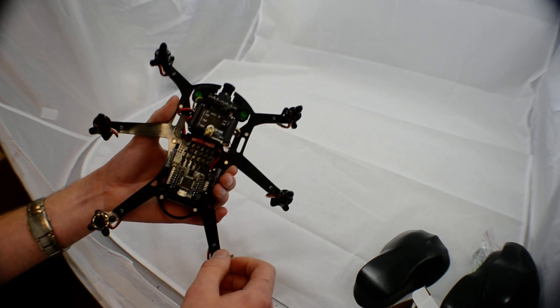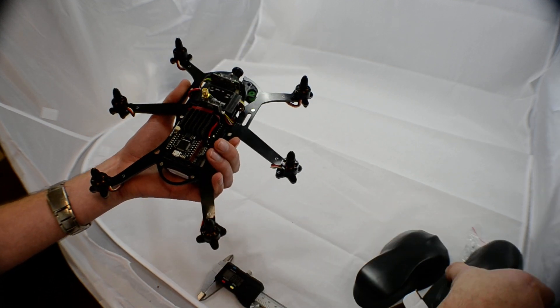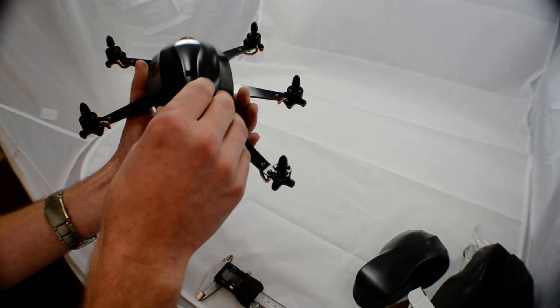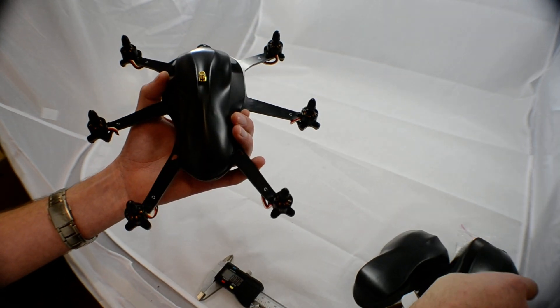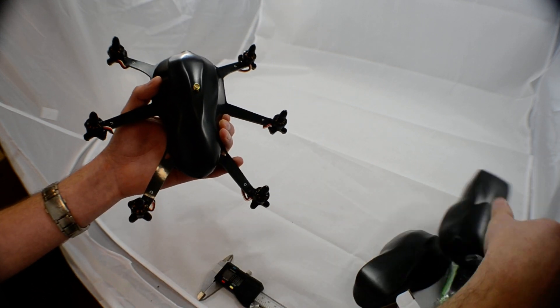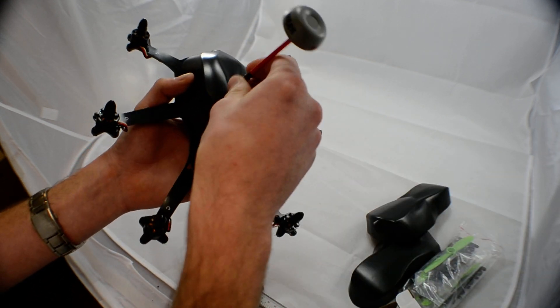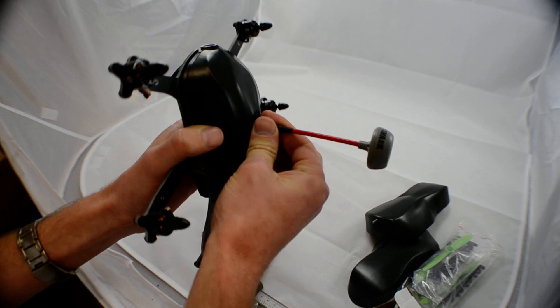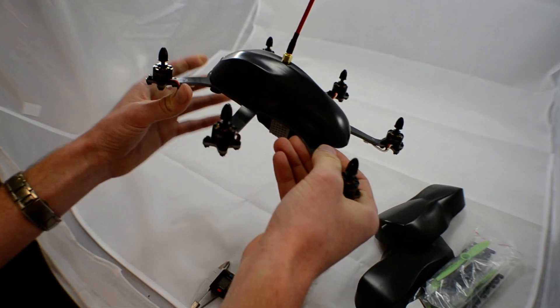So we're going to imagine for a second that the receiver is in and we're ready to put the canopy on. So slide your canopy over the top, over the VTX mount, second layer, and antenna on top. That's nice and sturdy. Nothing to worry about there.